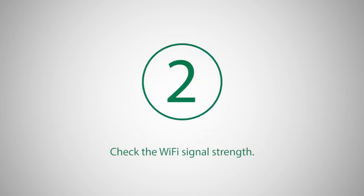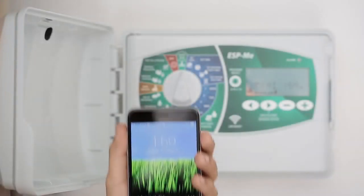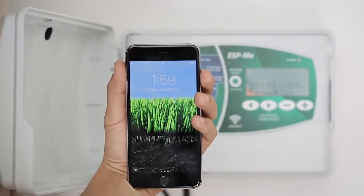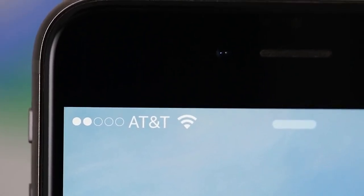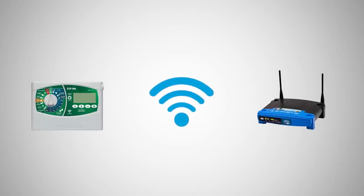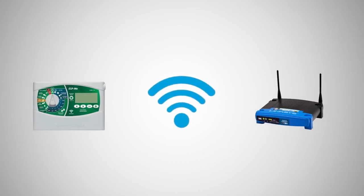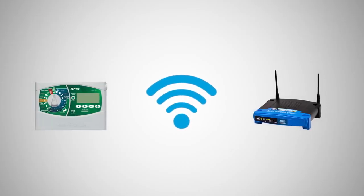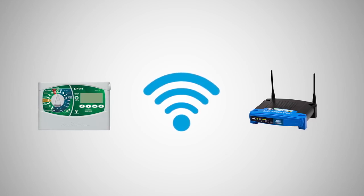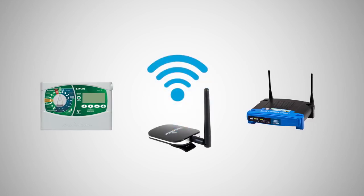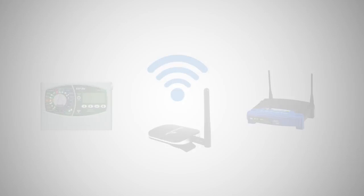Hold your phone next to the Rainbird controller and verify the signal strength of the network that the Wi-Fi module will be connected to. If the signal is weak, you may want to consider moving either the controller or the router so that they are closer together, or adding a Wi-Fi signal booster to the network.